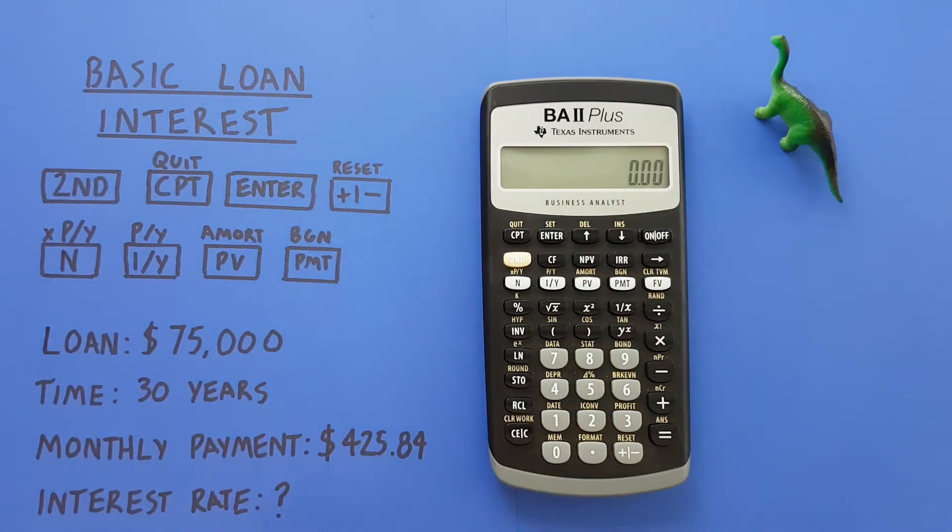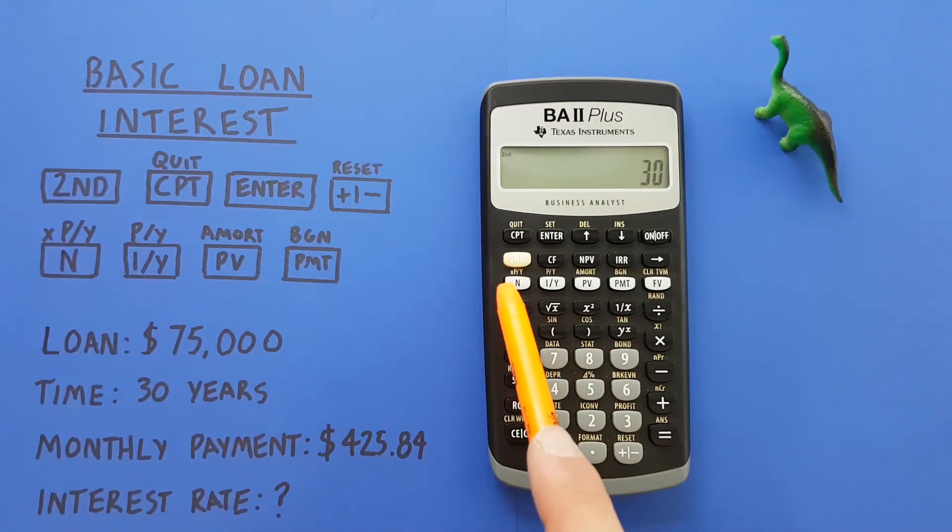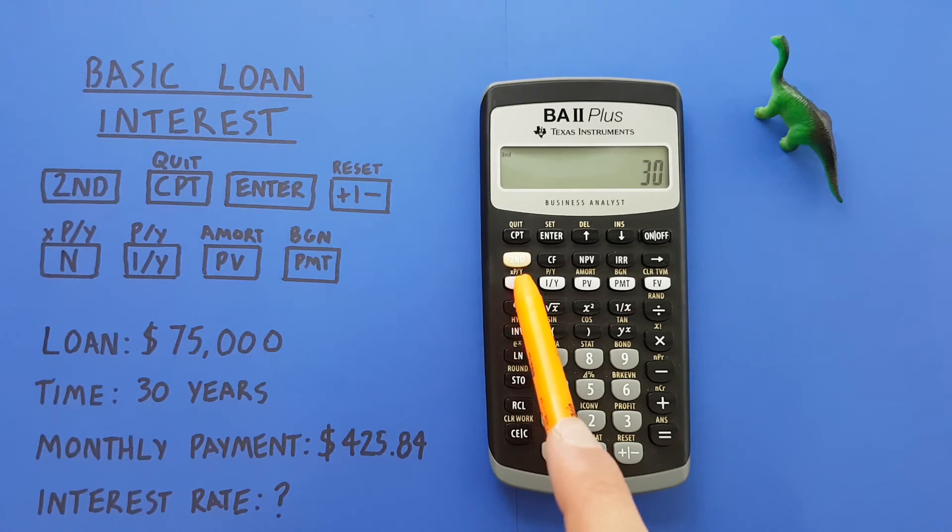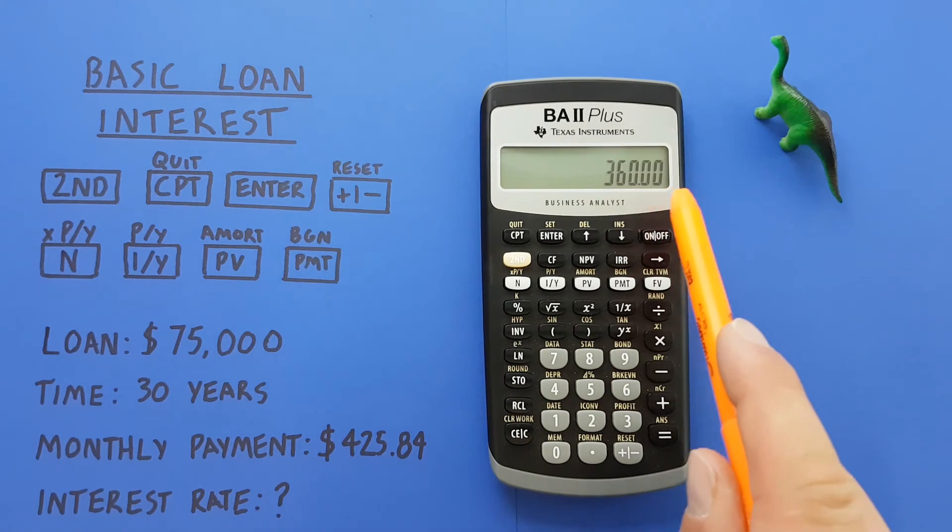Next we want to determine our total number of payments. We know this is over a time period of 30 years, so we can enter 30 and then use our payments per year multiplier. We press second and then the end key with times payments per year as a second function. This gives us 360, which makes sense—12 times 30.